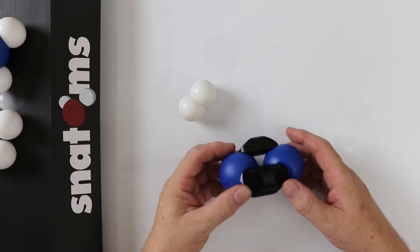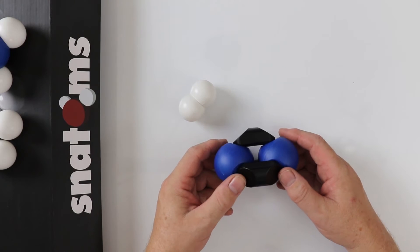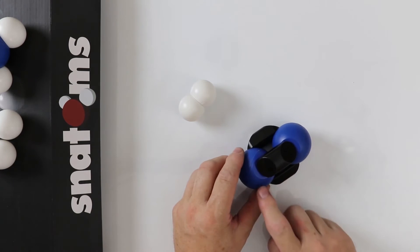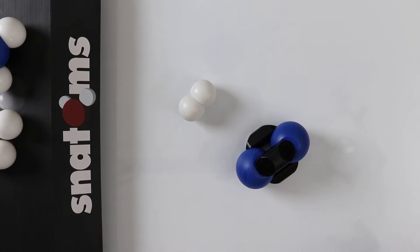This is a molecule of nitrogen gas which is found in air. It has two nitrogen atoms joined together by three bonds. This makes the substance very hard to break apart.